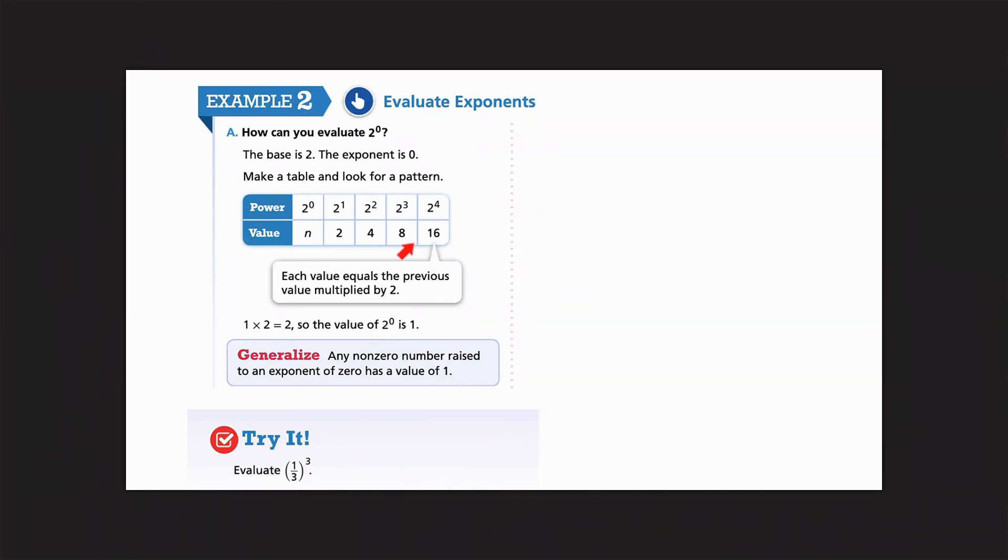So, here it's made a little table for us to look for a pattern. So, we start off with 2 to the 0 and then 2 to the 1st. I know 2 1 time is 2. 2 2 times is 4. And just like in the last problem, we saw 2 multiplied out 3 times is the same as 8. And it's going to keep going. So, when we're looking at this table, it says each value equals the previous value multiplied by 2.